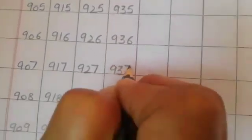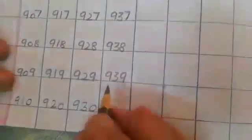936, 937, 938, 939. What comes after 939? 940.